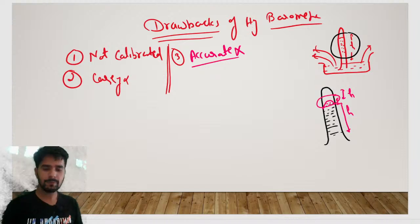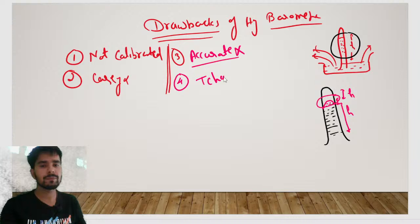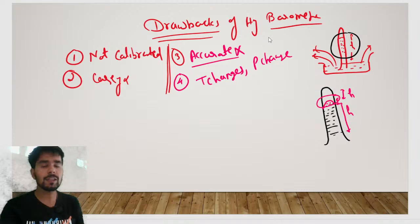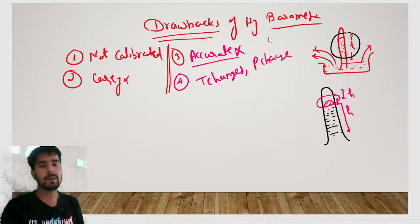Moving to the next condition: as temperature changes, if you go to a different region, there will be different atmospheric conditions — the temperature will be different and the pressure will be different. Therefore we cannot reliably use this type of barometer across varying temperature and pressure environments.